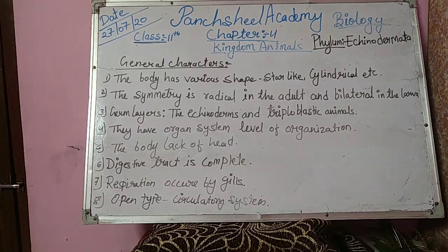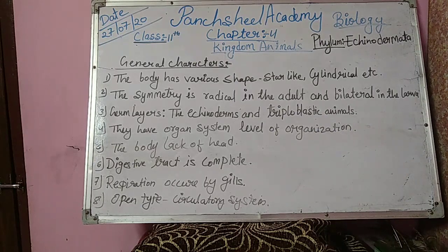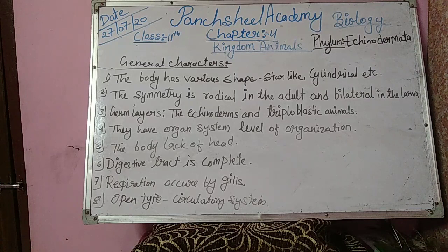Nervous system: the nervous system includes a nerve ring and radial nerve cord. Reproduction: sexes are separated, male and female fertilization is external. Copulation does not occur. Development: life history includes a ciliated bilateral symmetry larva that undergoes metamorphosis to change into a radial adult. Larva is named bipinnaria in starfish and ophiopluteus in brittle star.